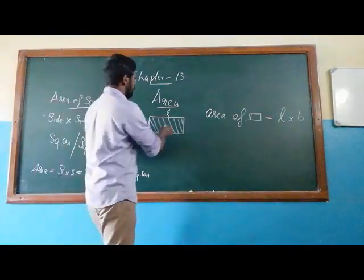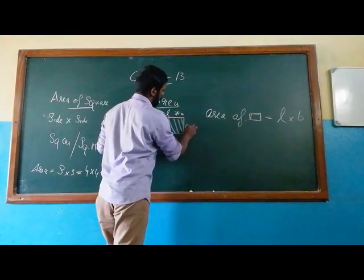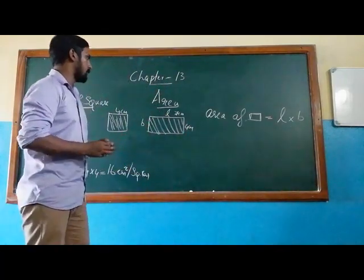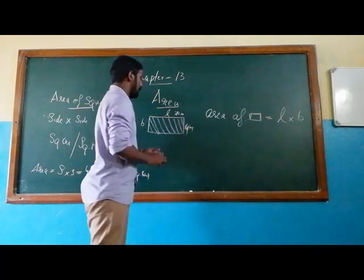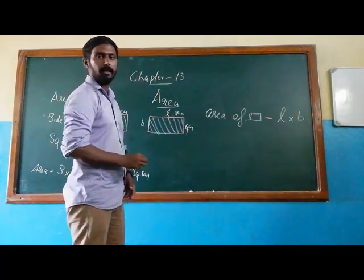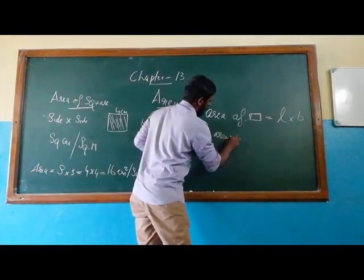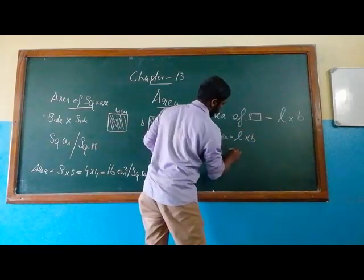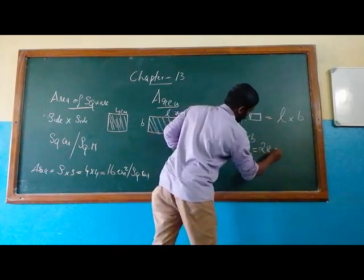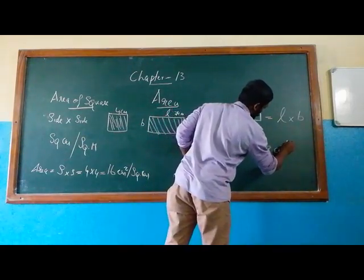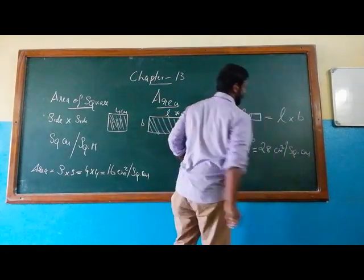Now let us see one example. Let the length be 7 cm and the breadth be 4 cm. In order to find out the area, area is equal to length into breadth, so that is 7 into 4, that is equal to 28 — either you can write this as cm square or square centimeter.